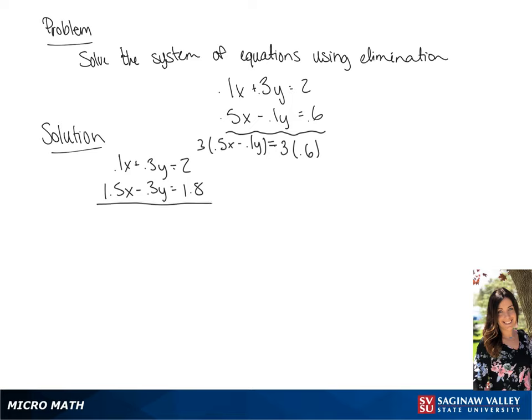Now we're going to add these two together, and we will get 1.6x equals 3.8. This gives us x equals 2.375.